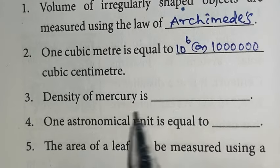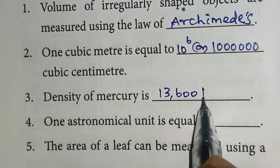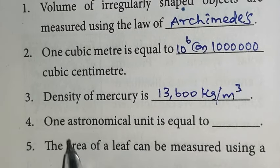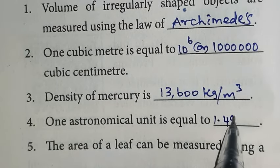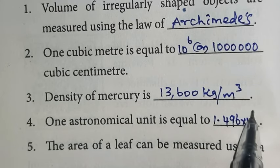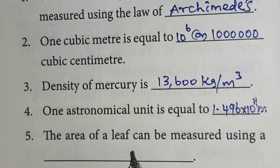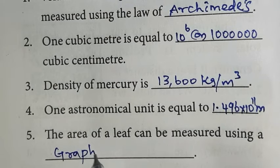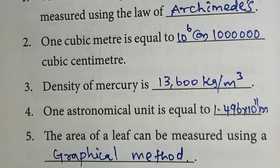Third one, density of mercury is 13,600 kilogram per meter cube. Fourth one, one astronomical unit is equal to 1.496 into 10 power 11 meter. Fifth one, the area of a leaf can be measured using a graphical method.